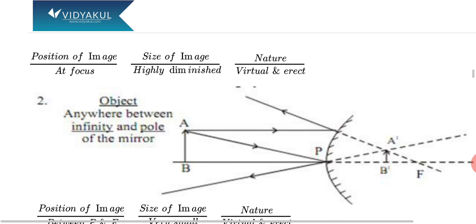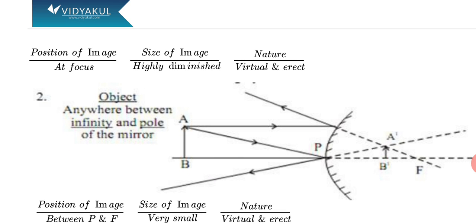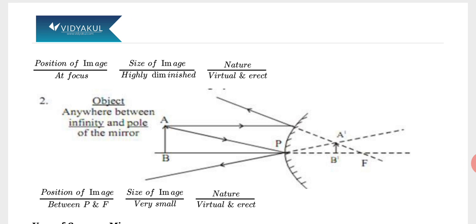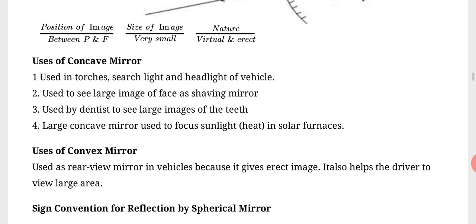Second, object placed anywhere between infinity and pole. When we place between infinity and pole, one ray goes parallel to principal axis and one through pole P. Both reflect and meet behind mirror between P and F. Size very small, nature virtual and erect. This way we learned the conditions.